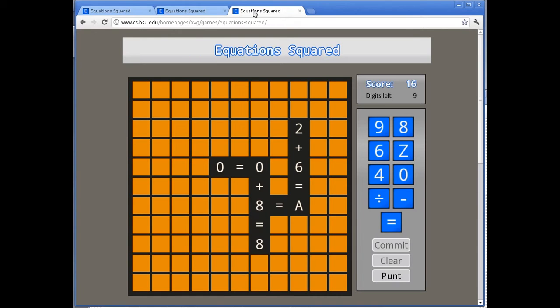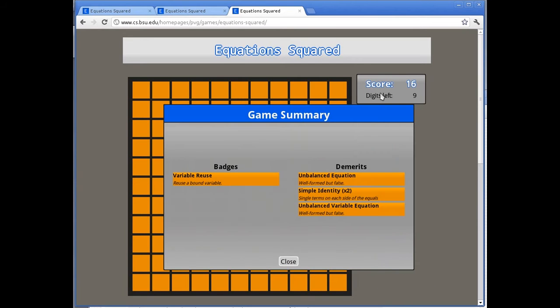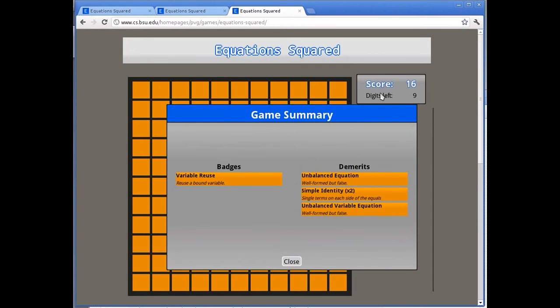If you scroll down the webpage, there are complete instructions for the game, along with examples that demonstrate the rules. Clicking on this box, we can see the badges and demerits.